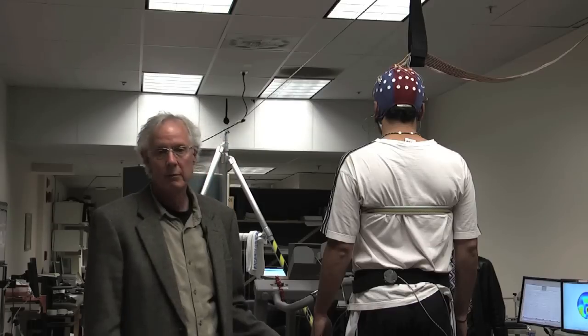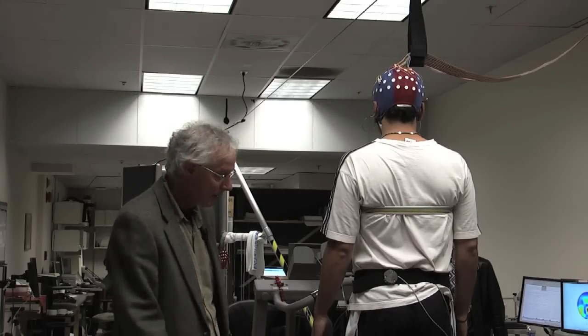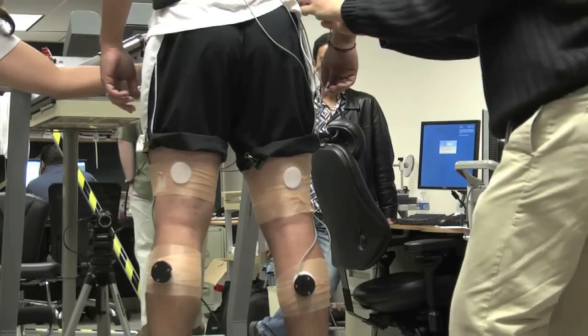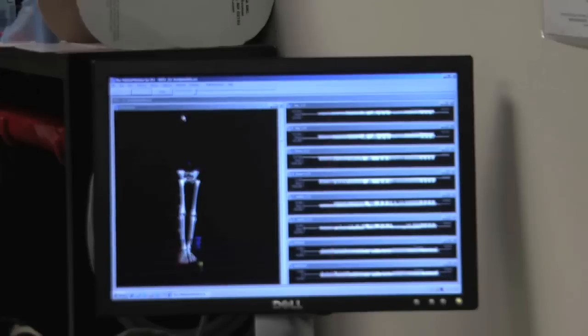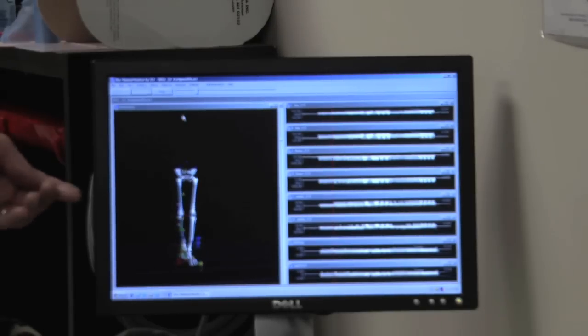We also have to instrument the subject to capture their movements as they walk on the treadmill. Here you see an array of LEDs, or light-emitting diodes, that can be captured by sensors to tell us the three-dimensional movements of the legs as the individual walks on the treadmill.